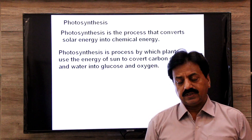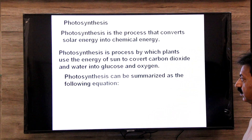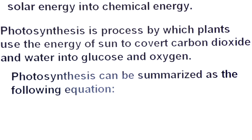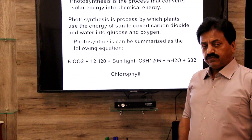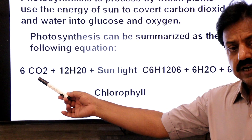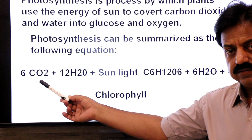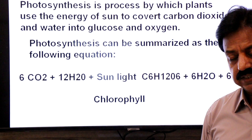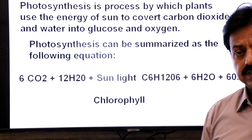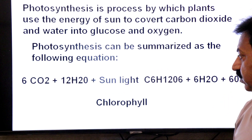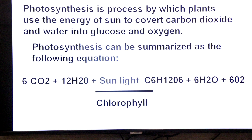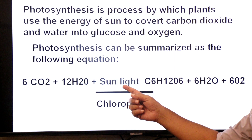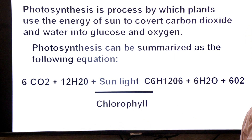Photosynthesis can be summarized by the following equation. Plants take up six molecules of carbon dioxide through stomata, and twelve molecules of water through the roots. Plants absorb sunlight with the help of a pigment known as chlorophyll.